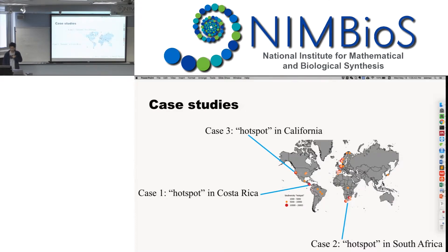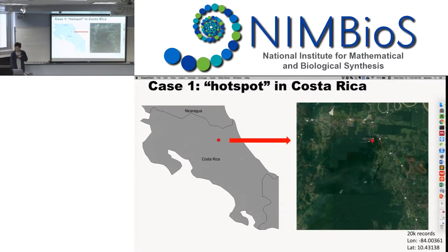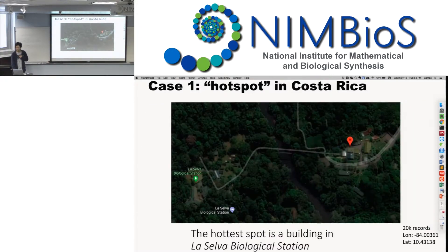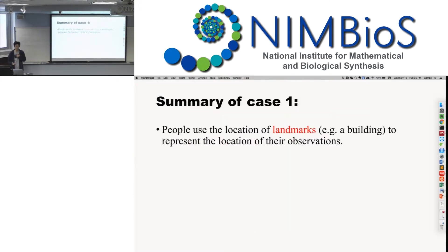The first case study is the hotspot in Costa Rica. We know Costa Rica has high biodiversity. However, if we look at this point on the map closely enough, it is a building of a biological station. Over 20,000 records all have the same coordinates located there — that's obviously an issue. There's also another case: over 1,000 records collected exactly around a shooting range in probably Norway. So the pattern here is that people use location landmarks to represent their observations of species.